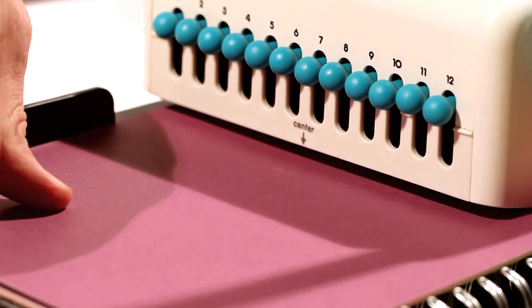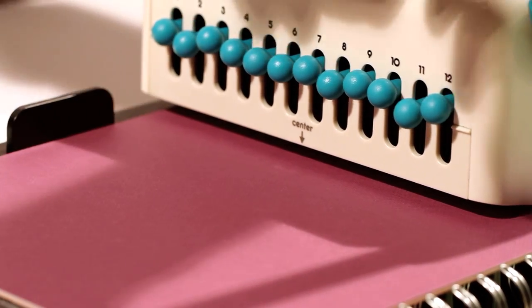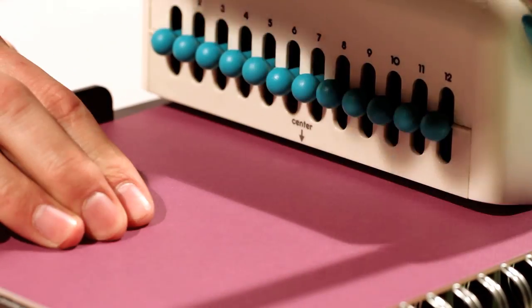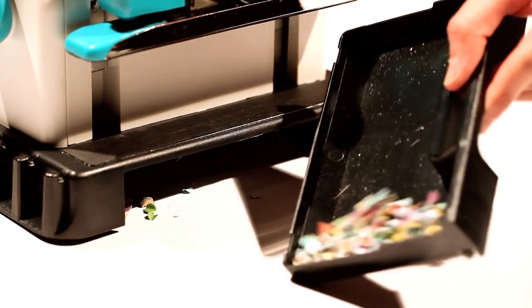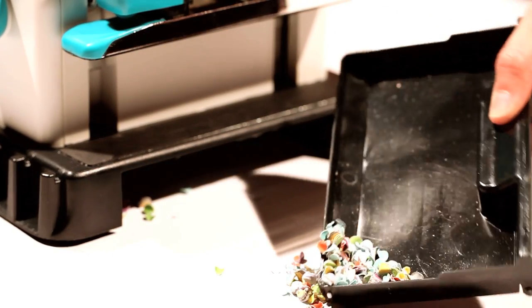The Cinch can actually punch multiple pages at once, which is nice if you're trying to save time. Also, all of the punch waste is stored in a convenient waste bin to help keep cleanup to a minimum.